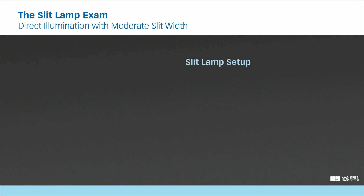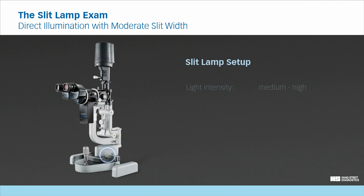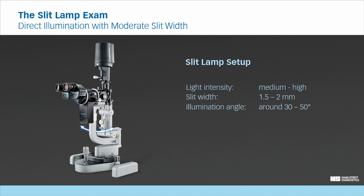Slit lamp setup. To set up the slit lamp, choose a medium to high light intensity and a slit width between 1.5 and 2 mm. Set the illumination angle between 30 and 50 degrees. For examining the cornea, choose a magnification of 16 times for a first glance, then re-examine the center of the cornea with a magnification of 25 times. For the evaluation of the lens, a magnification of 10 times is appropriate to get a better depth of focus.